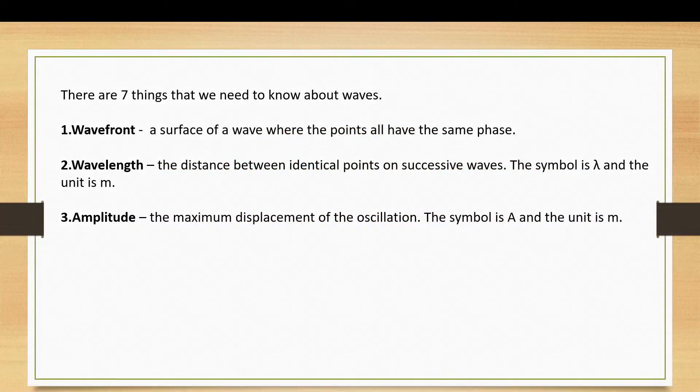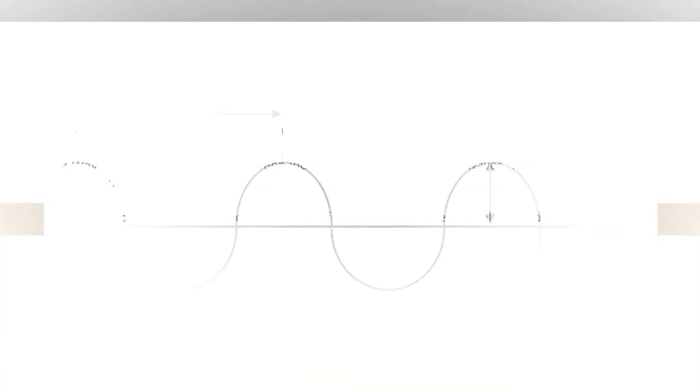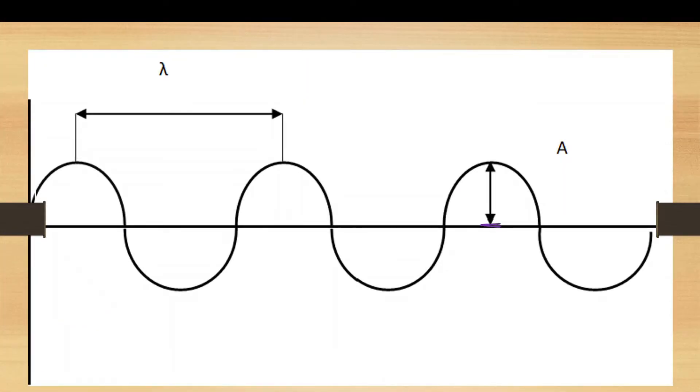The second and third things, very familiar from GCSE, I hope. Wavelength is the distance between identical points on successive waves, from the crest of one wave to the crest of another, from the trough of one wave to the trough of another. And amplitude is the maximum displacement, the height of the wave from zero displacement or from the equilibrium position to its maximum displacement. Be very careful and don't imagine that the total height of the wave is the amplitude, it's not.